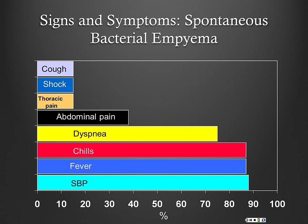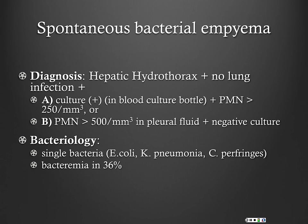Signs and symptoms of SBE are nonspecific, just suggesting infection. Abdominal pain and thoracic pain are both very rare. We diagnose SBE the same way as SBP: if the culture is positive and PMNs are greater than 250, or if PMNs are greater than 500 with a negative culture, then we think they have SBE.